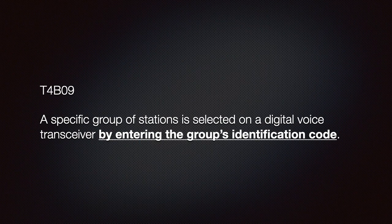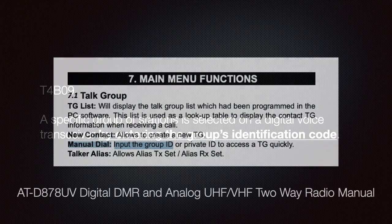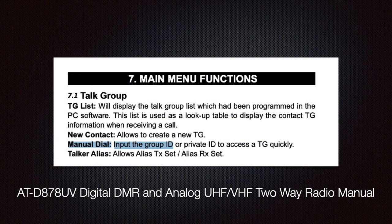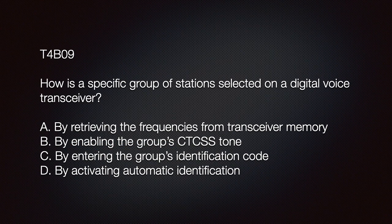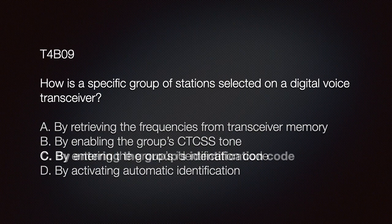You should be aware that a specific group of stations is selected on a digital voice transceiver by entering the group's identification code. The exam question asks how a specific group of stations is selected on a digital voice transceiver. The correct answer is C — by entering the group's identification code.